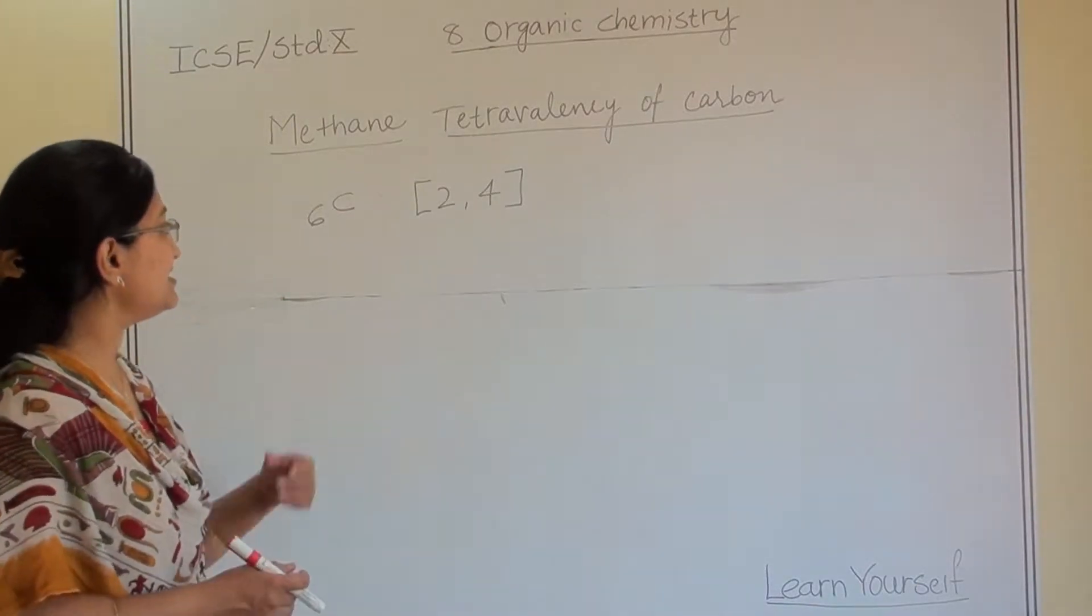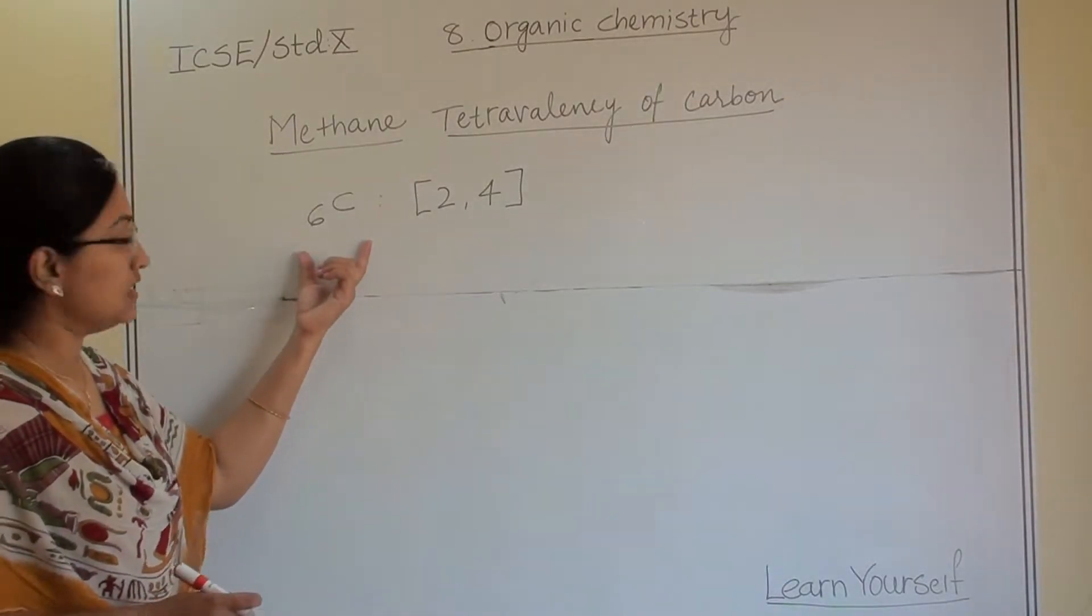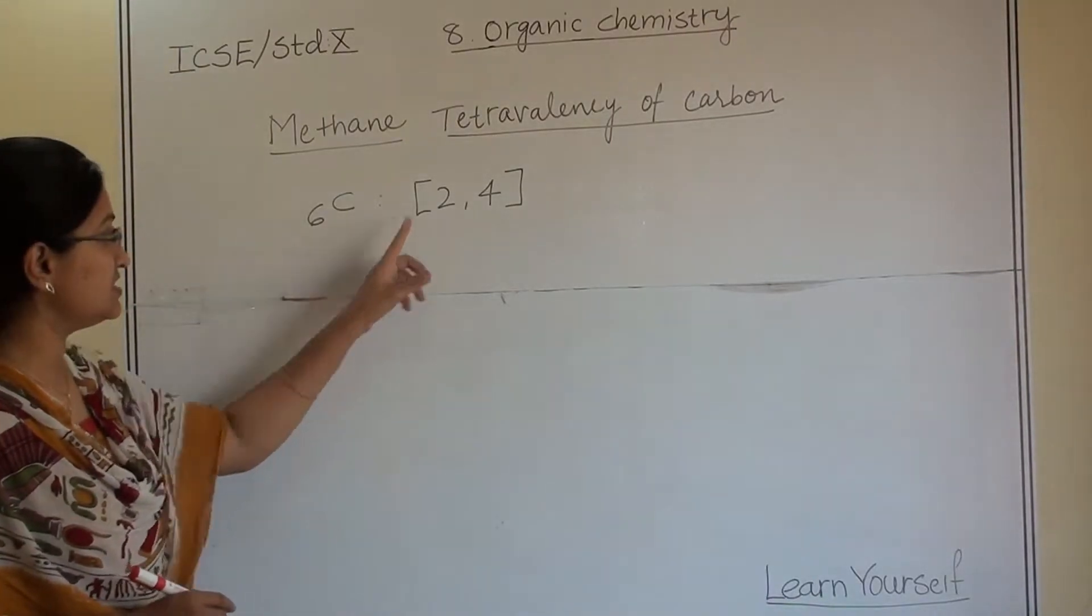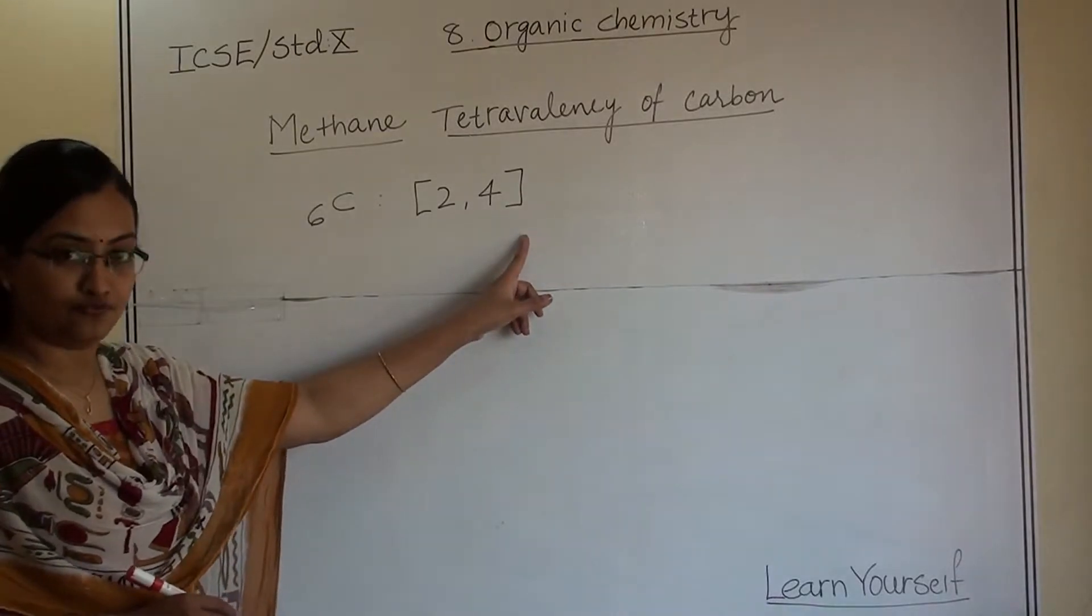So let us start from carbon. Carbon's atomic number is 6, and its electronic configuration is 2 and 4.